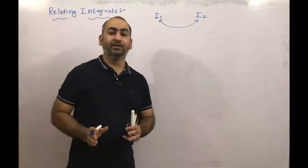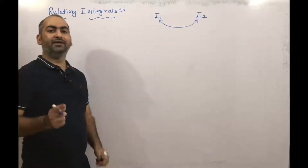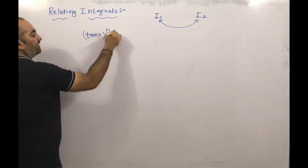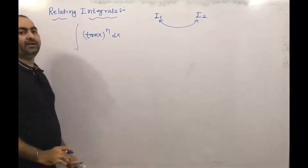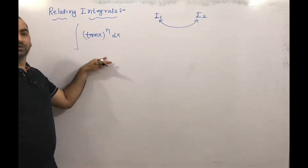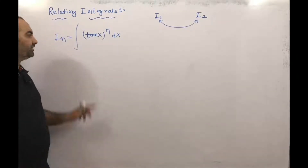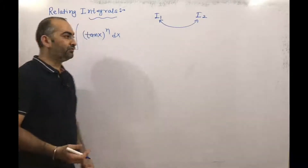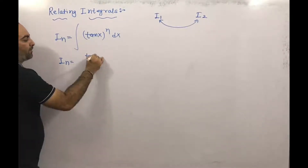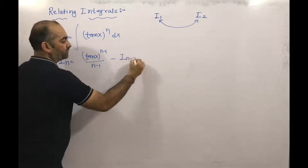In some problems, we will use the relation between one integration and another. For example, in indefinite integration, we discussed the integral of tan(x)^n dx. We assume this integration as In. Using integration by parts, we get the relation: In = tan(x)^(n-1) / (n-1) minus I(n-2).